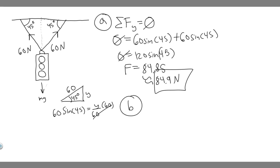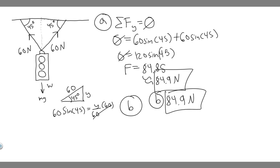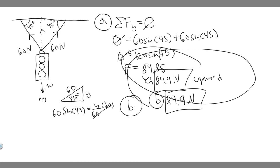Now for Part B, we're trying to find the weight of the light. Weight is just mg. Think about how this works: 84.9 newtons is the force holding it up, and if it's in place, mg must also equal 84.9 newtons — because if one were greater, it would cause it to move. Since the forces are equal, it's stationary. So mg equals 84.9 newtons. The resultant force is directed upward since the tension forces are upward, so 84.9 newtons upward is also the weight force answer.